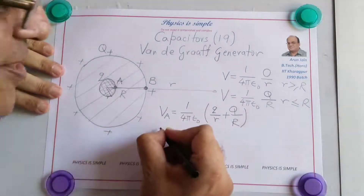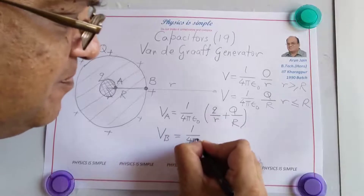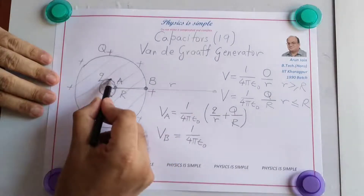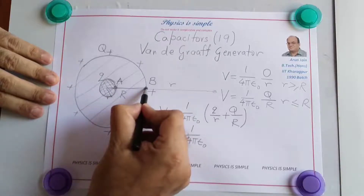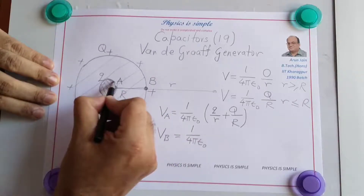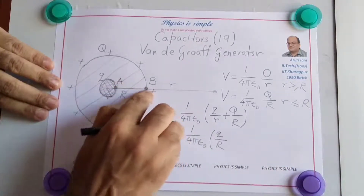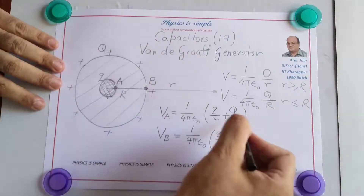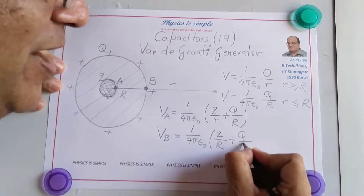Now calculating the potential at B: (1/4πε₀) will be common. The inner sphere q behaves like a point charge at the center for this outside point, so its contribution is q/R. The potential due to the outer spherical shell remains the same everywhere inside, so it is Q/R. Therefore VB = (1/4πε₀) × (q/R + Q/R).